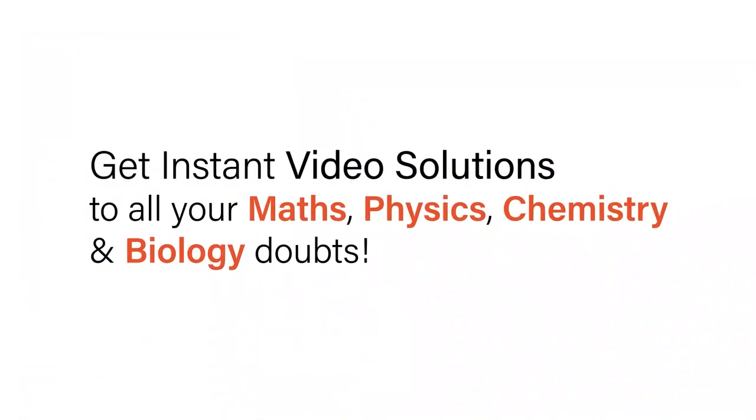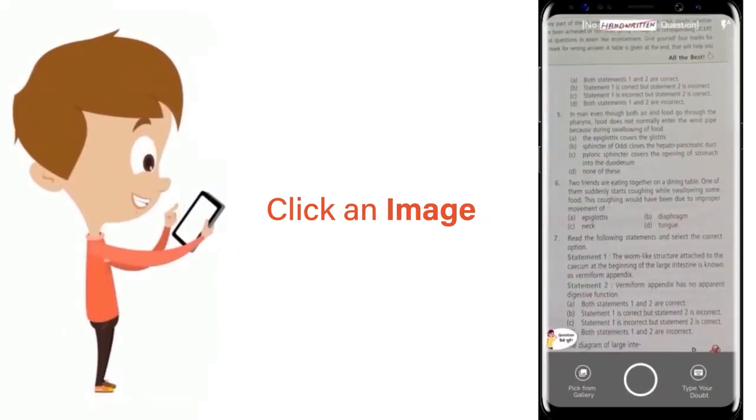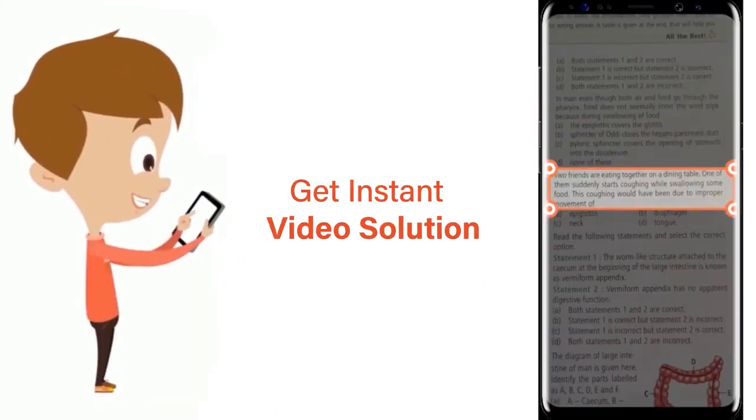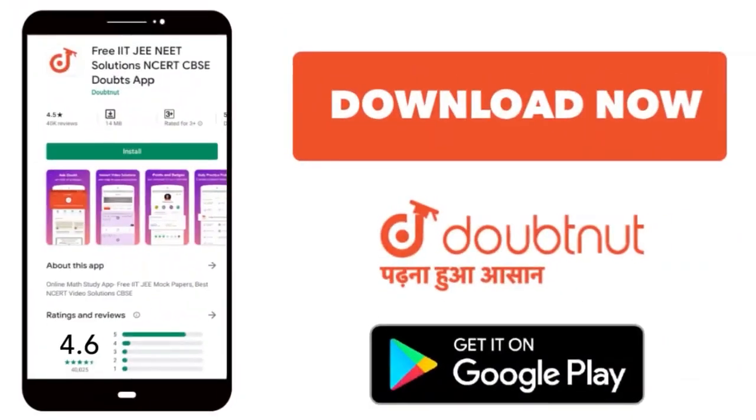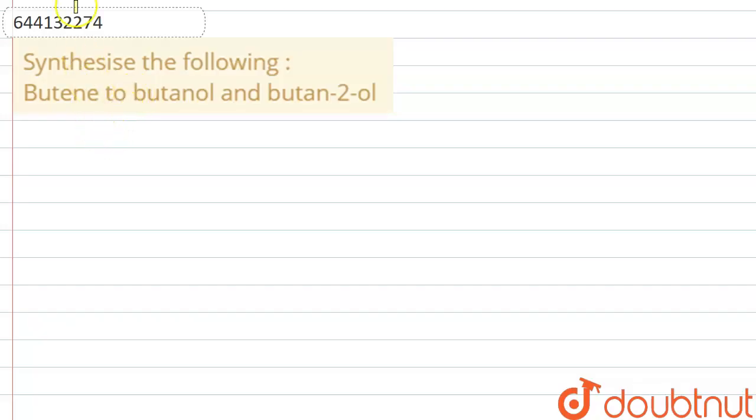With Doubtnet, get instant video solutions to all your math, physics, chemistry, and biology doubts. Just click the image of the question, crop it, and get instant video solution. Download Doubtnet app today. Hello everyone, this is a question: synthesize the following - butene to butanol and butane-2-ol. So we are having butene.